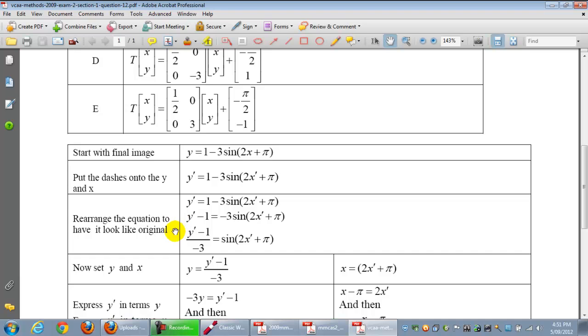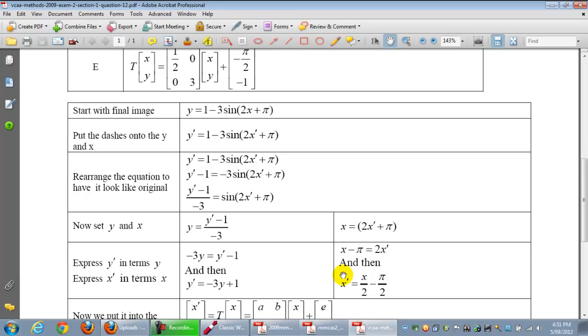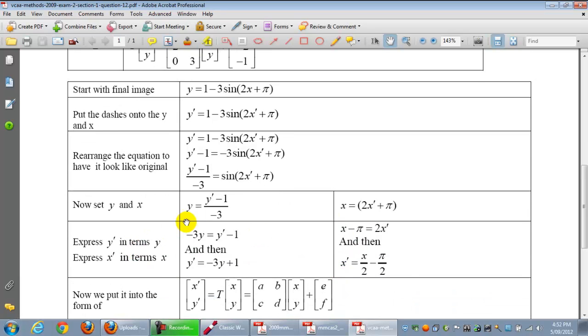Now we are setting this as y and this as x. We're expressing y' in terms of y and x' in terms of x. And this is what you get: y' = -3y + 1, and x' equals this.